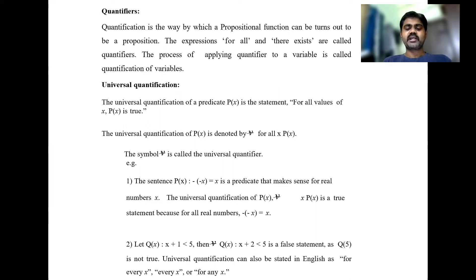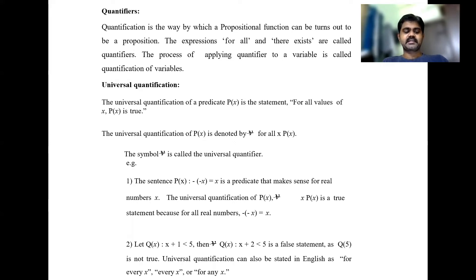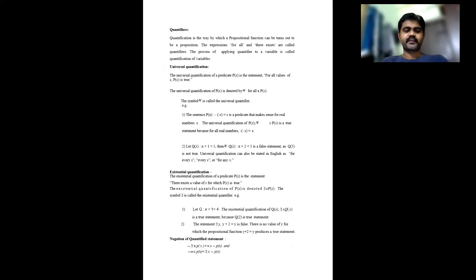Universal quantification can also be stated in English as 'for every x', 'every x', or 'for any x'. In some cases it will be true and in some cases it will be false, as we saw in the second example where it is false.